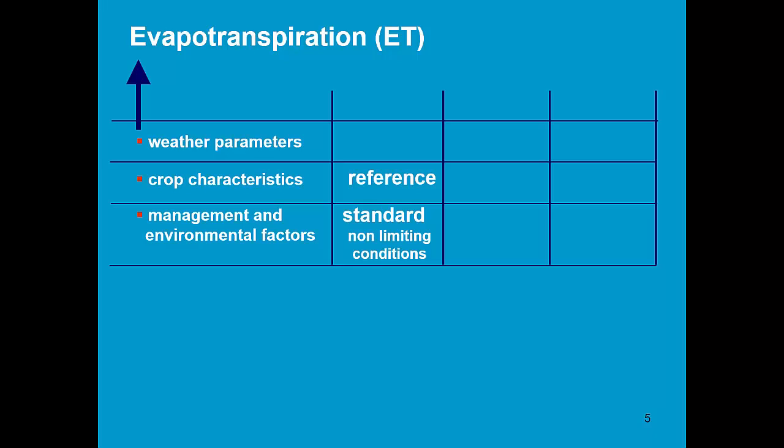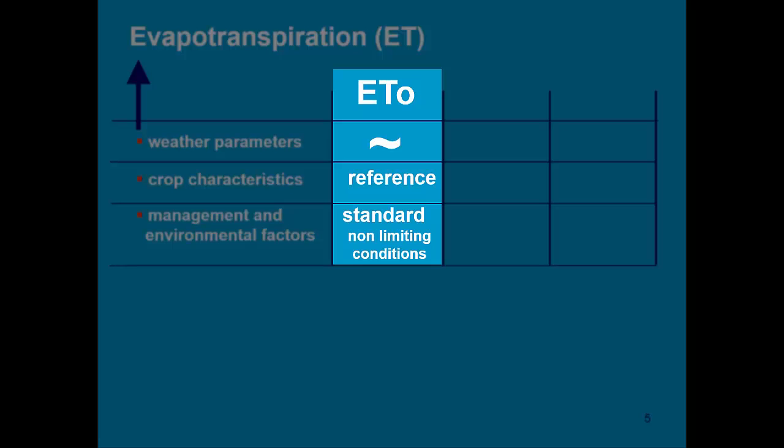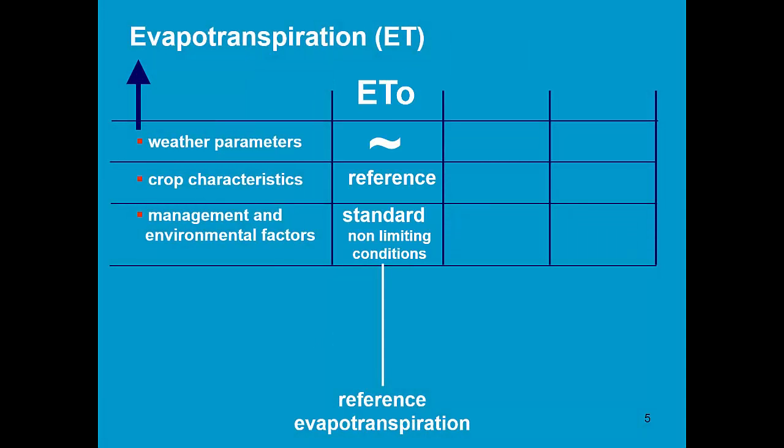There is no water stress, no fertility stress, no pests, no diseases. So the only factor affecting evapotranspiration are the weather parameters. This evapotranspiration is called ET₀ or ETₒ and it is the reference evapotranspiration.